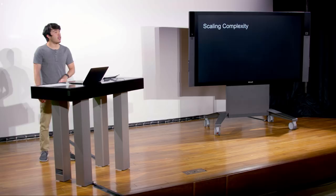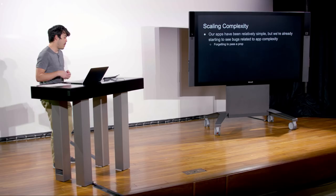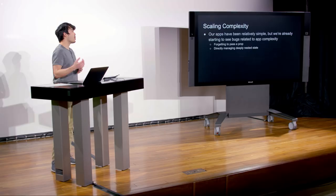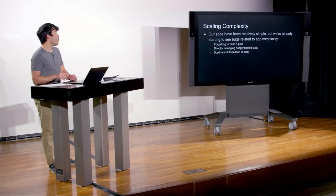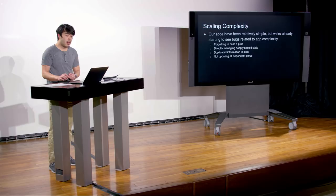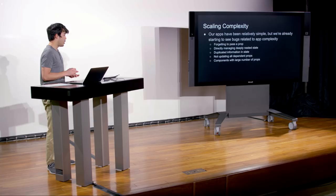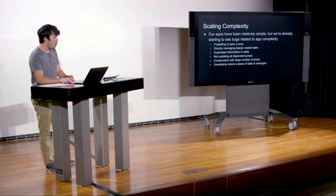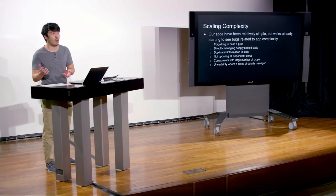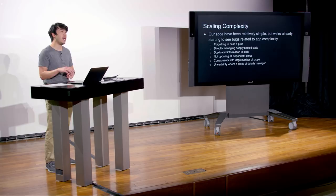Our applications, as we move throughout the class, are getting more and more complex, and now we're starting to run into some problems. Our apps thus far have been pretty simple, but we're already starting to see bugs related to complexity — maybe we forget to pass a prop, or have trouble managing state that's possibly deeply nested. With more complicated state, we might start to duplicate information, forget to update dependent props, have components with a very large number of props, or not know where exactly a prop should be managed. So this lecture, we're going to take a step back and rethink the architecture by which we've been managing our data.